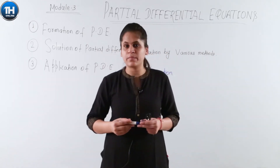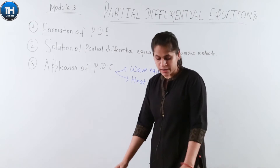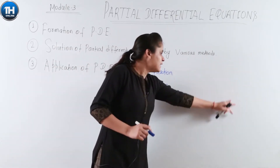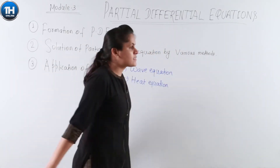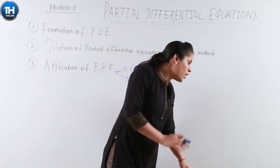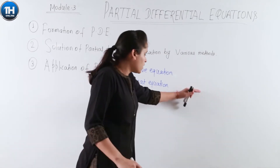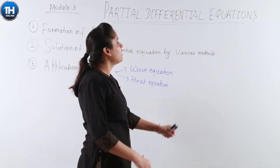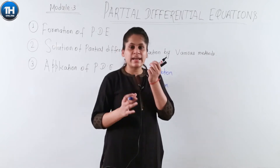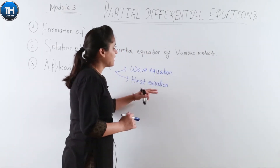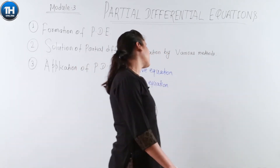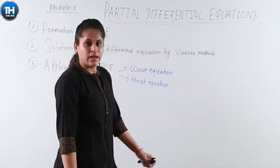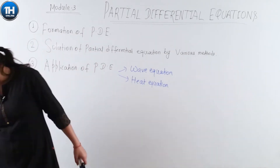Otherwise, in electrical engineering you will be using partial differential equations to solve Jacobians in power systems. The Jacobians are large matrices with many parameters in which lots of partial differential terms appear. I know about electrical engineering because I belong to the electrical branch. But here in our M3 syllabus, we have to study the application of partial differential equations in the form of the wave equation and the heat equation. So let us start the first topic: the formation of partial differential equations.